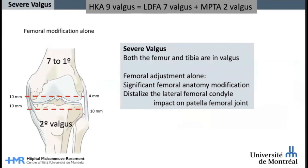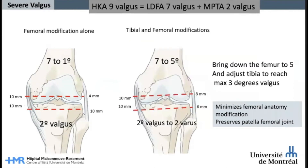In more severe valgus, both the femur and the tibia are in valgus. In this example, the femur is in 7 degrees valgus and the tibia in 2 degrees valgus. Performing femoral adjustment alone would impact the femoral anatomy significantly. As for severe varus knees, to minimize the anatomy modification, we should balance the adjustment with the tibia. Bringing down the femur from 7 degrees to 5 and changing the tibia from 2 degrees valgus to 2 degrees varus will balance the resection on both bones. The severe valgus and severe varus knee should not be managed similarly to optimize femoral anatomy preservation.